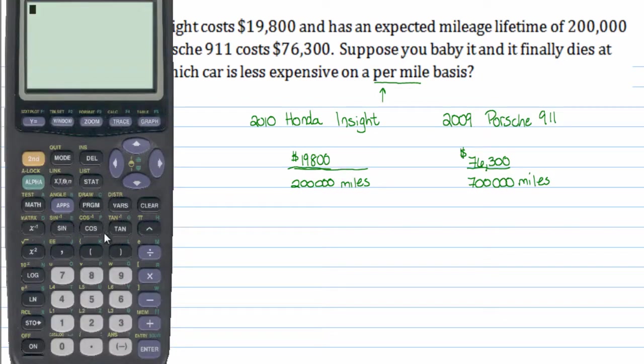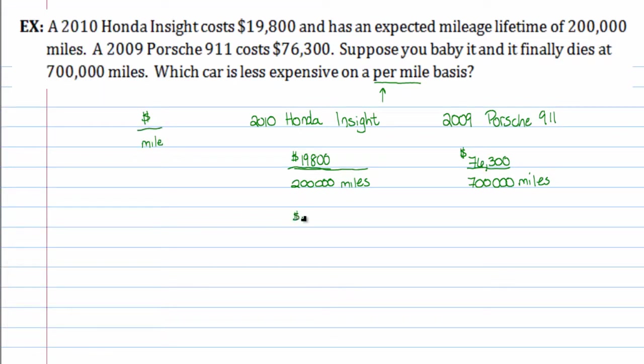Now, bringing up the handy-dandy calculator here, I'll just go ahead and type in the first one here, the Honda Insight, $19,800. I'm going to divide that by 200,000. So on a per mile basis, that's $0.099 per mile. It's about $0.10 a mile. That's what you're spending for the lifetime of that Honda Insight.